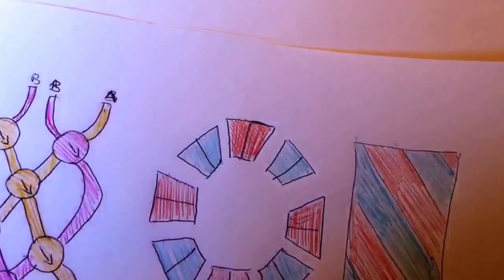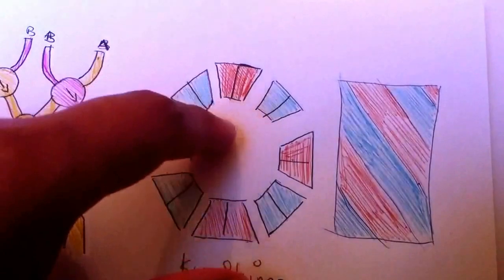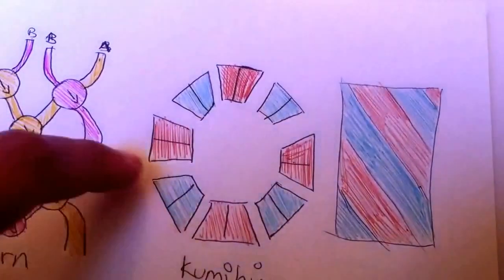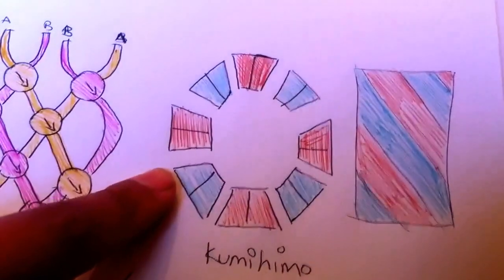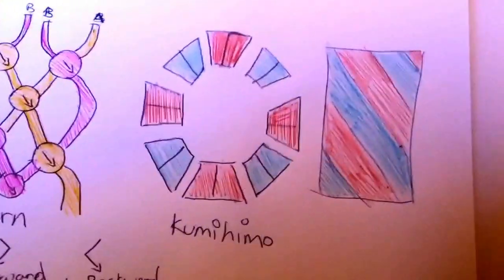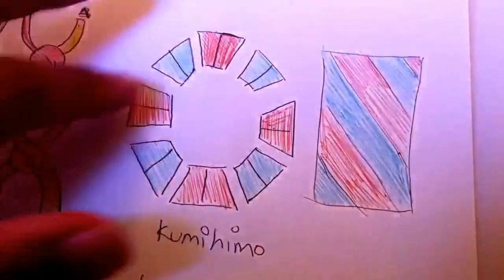And then it'll tell you how many strings that you have in this pattern. For example, there's one, two, three, four, five, six, seven, eight, eight pairs of strings, that would be 16 strings in total, and that is your kumihimo pattern right there.